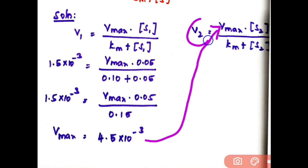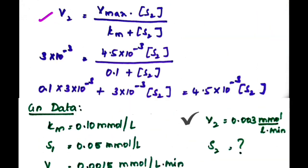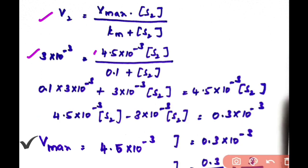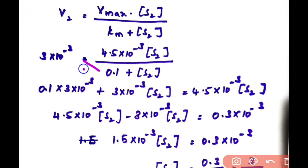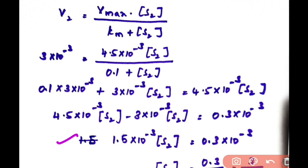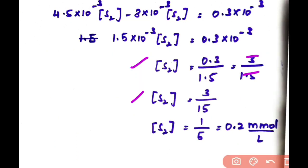Substituting Vmax = 4.5 × 10⁻³ into the equation for v2: v2 = 3 × 10⁻³, Vmax = 4.5 × 10⁻³, Km = 0.1. Cross-multiplying: 0.1 × 3 × 10⁻³ + 3 × 10⁻³ × S2 = 4.5 × 10⁻³ × S2. Rearranging: 4.5 × 10⁻³ × S2 − 3 × 10⁻³ × S2 = 0.3 × 10⁻³. So S2 = 0.3 / 1.5 = 3/15 = 1/5 = 0.2 millimole per liter.